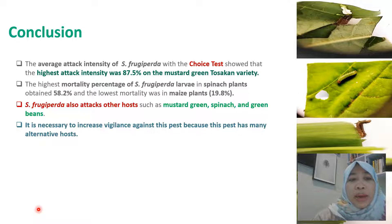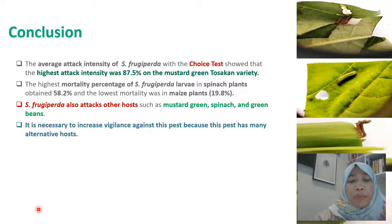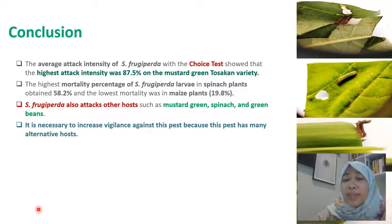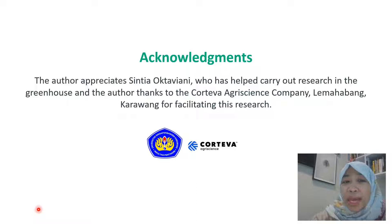In conclusion, the attack intensity of S. frugiperda in the choice test was highest in mustard green at 87.5%. The mortality percentage of S. frugiperda was highest in spinach at 58.2%, and the lowest mortality was in maize plants. S. frugiperda also attacked other host plants such as mustard green, spinach, and green beans. It is necessary to increase vigilance against this pest because it has many alternative hosts.